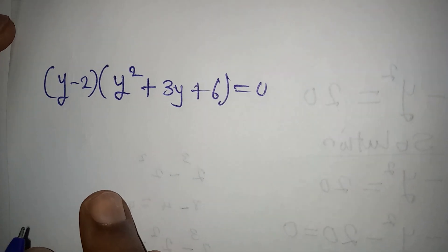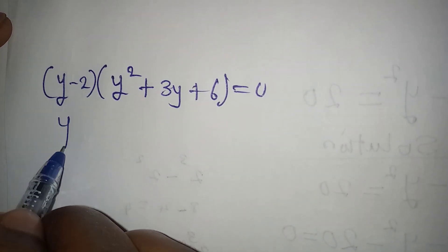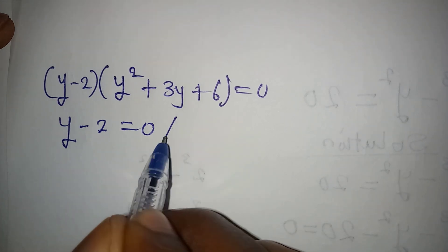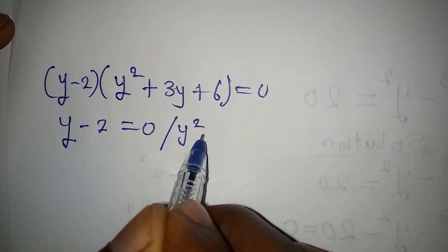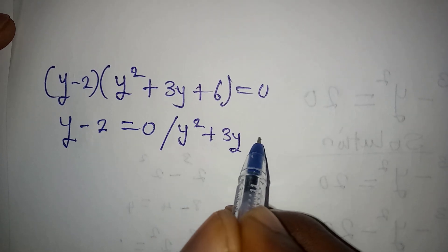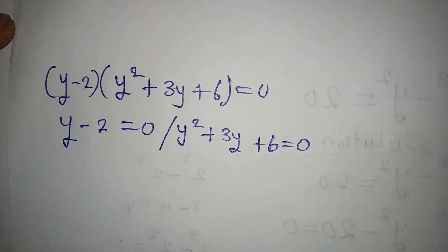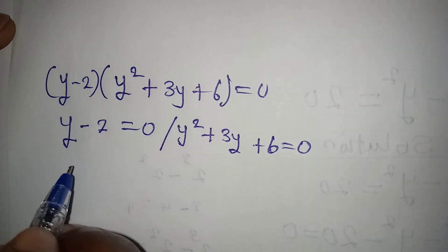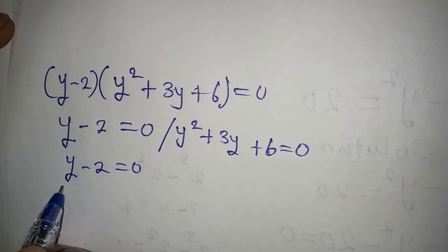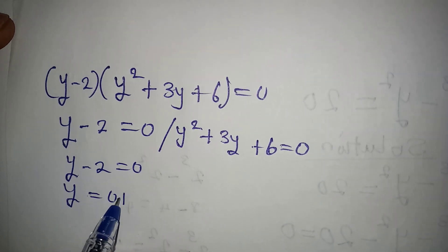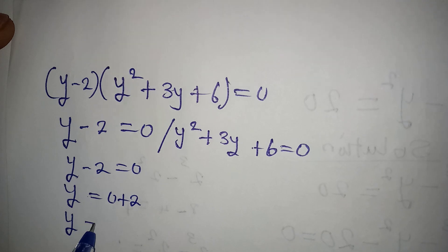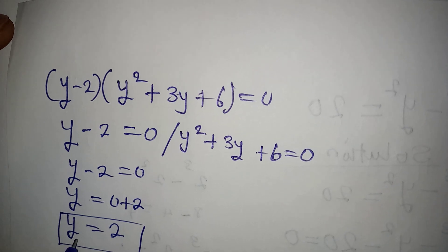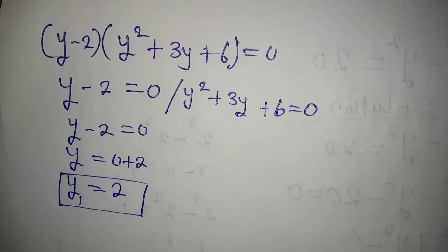So this is what we have, meaning that y minus 2 is either equal to zero, or y squared plus 3y plus 6 is equal to zero. We'll deal with each one after the other. From y minus 2 equals zero, we get y equals 2. This is the first value of y — we can call this y1.